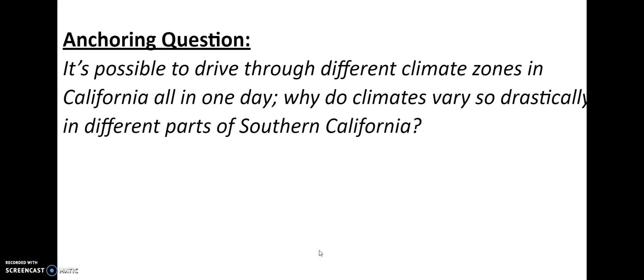Now we are going to have an anchoring question — the question we're going to try to answer throughout the entire unit. Is it possible to drive through different climate zones in California all in one day? Why do climates vary so drastically in different parts of Southern California? For example, why is there snow up in the mountains but also a beach so close to LA, and a desert nearby?